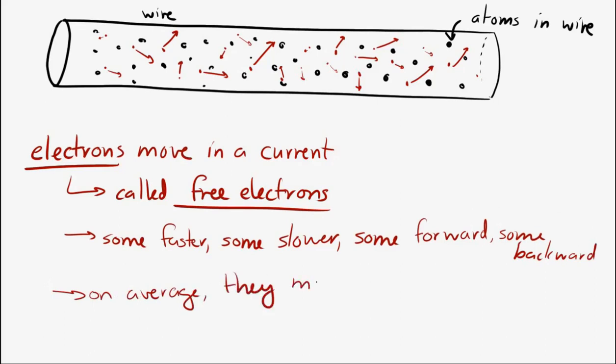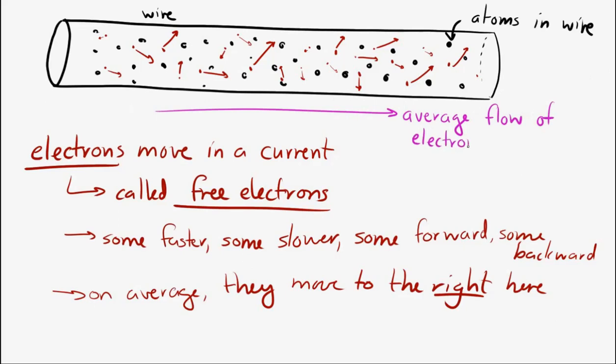And these fixed atoms in there, these things that are the fixed atoms in the wire, the conducting material's atoms, they don't move. They're stationary, right? They're part of the material of the wire, so they're stuck there in the wire. It's just the electrons that are moving.